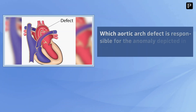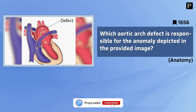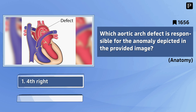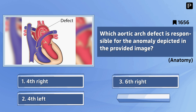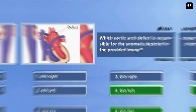Question 8: Which aortic arch defect is responsible for the anomaly depicted in the provided image? Your options are: fourth right, fourth left, sixth right, sixth left. And the correct answer is sixth left.